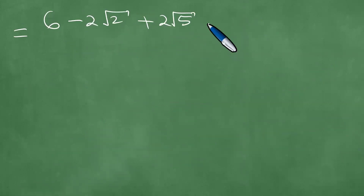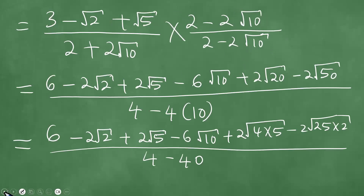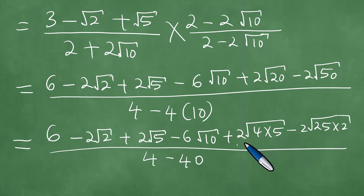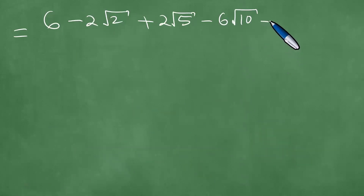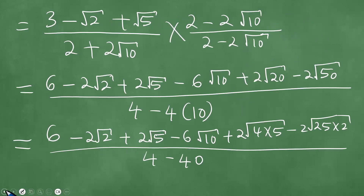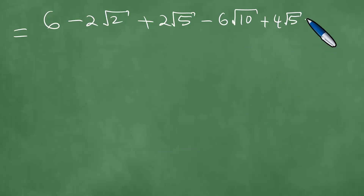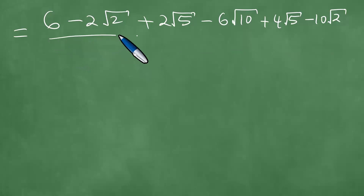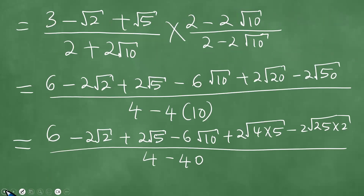Minus 6 times the square root of 10. And then the square root of 4 times 5 becomes 2 times the square root of 5, which is plus 4 times the square root of 5. And this one becomes minus 10 times the square root of 2. All over 4 minus 40, which is minus 36.